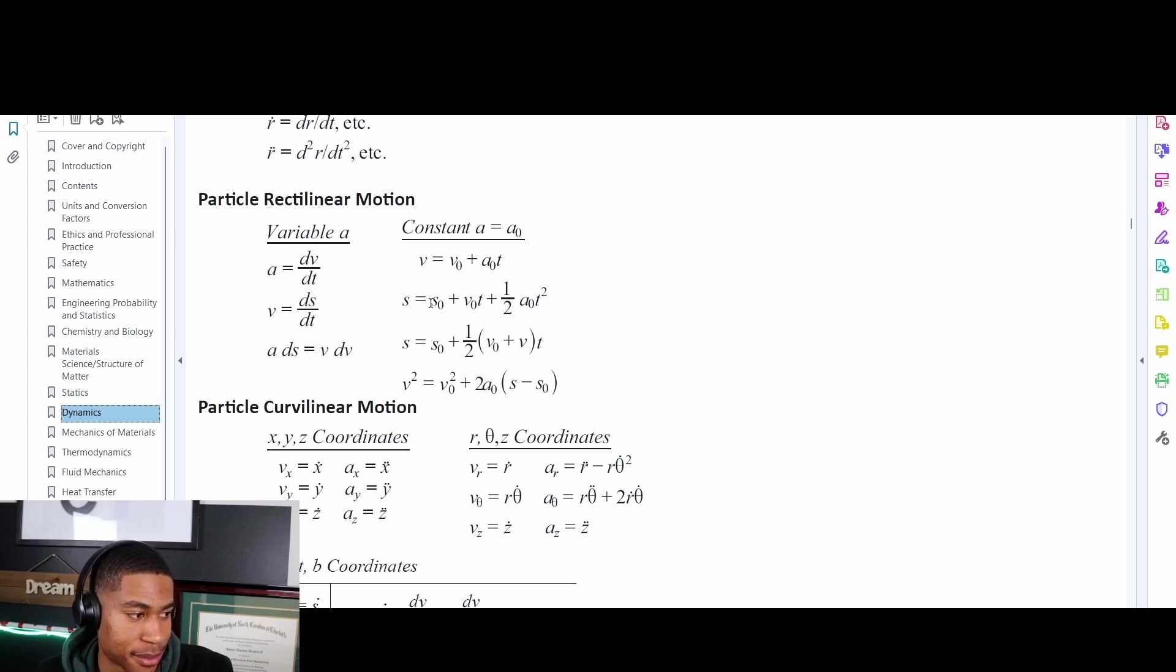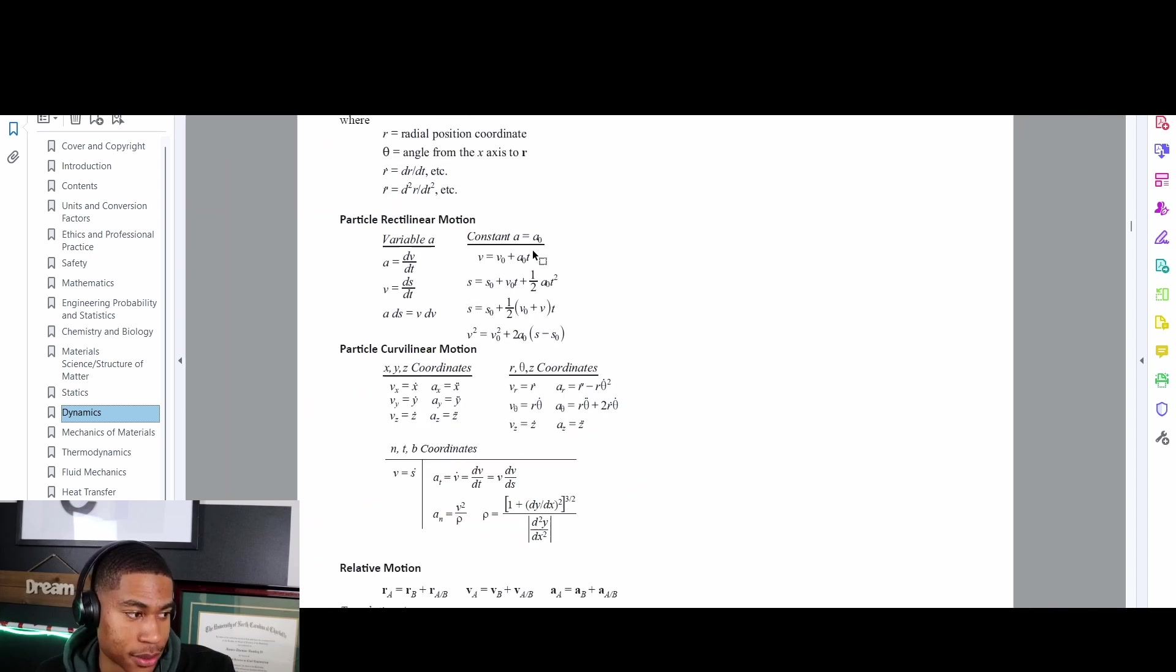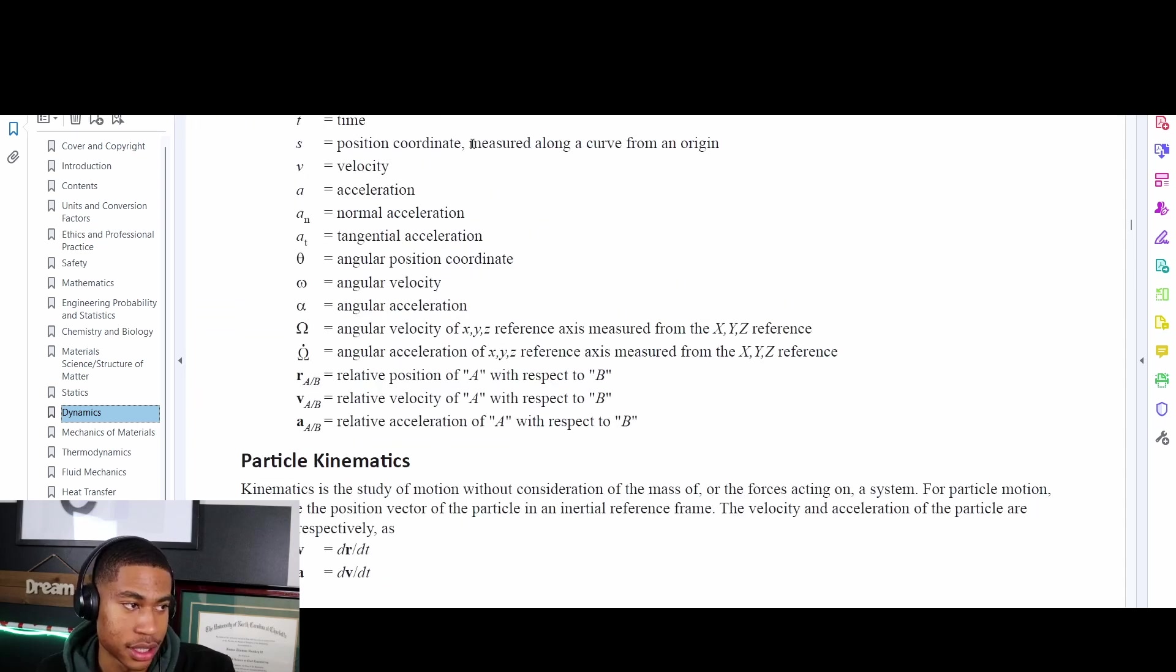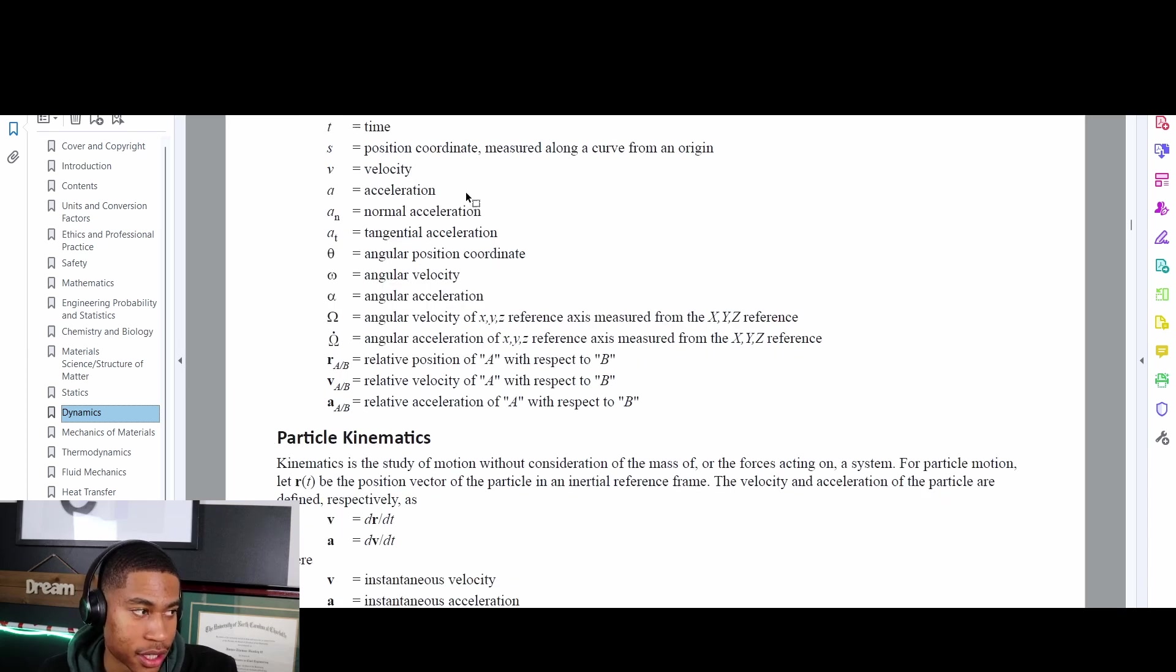Particle rectilinear motion. These are the list of formulas where if you have velocity, acceleration, or time you're able to pull those formulas. So I pulled this one right here and this one right here, but you may not know what s is or v or a. So if you don't, scroll up here: s is position coordinate, a distance, t is time, v is velocity, a is acceleration. Your handbook is meant to help you and if you don't know what symbols mean don't be afraid to look and guide yourself that way.